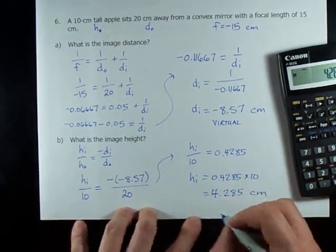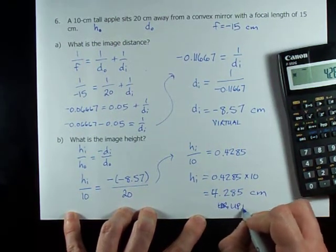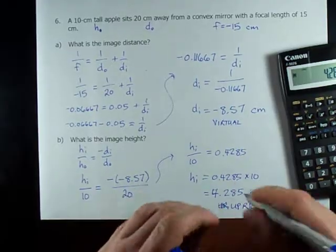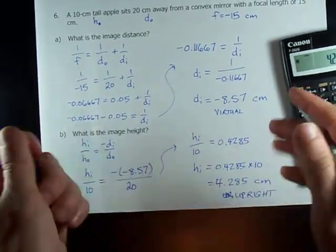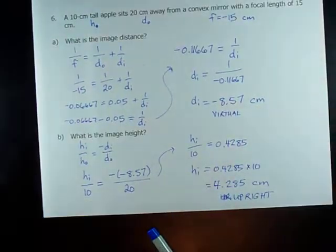It's a positive image height, which means that this is an upright image, not upside down or inverted. But they didn't ask that either. They just asked for the image height and we got it.